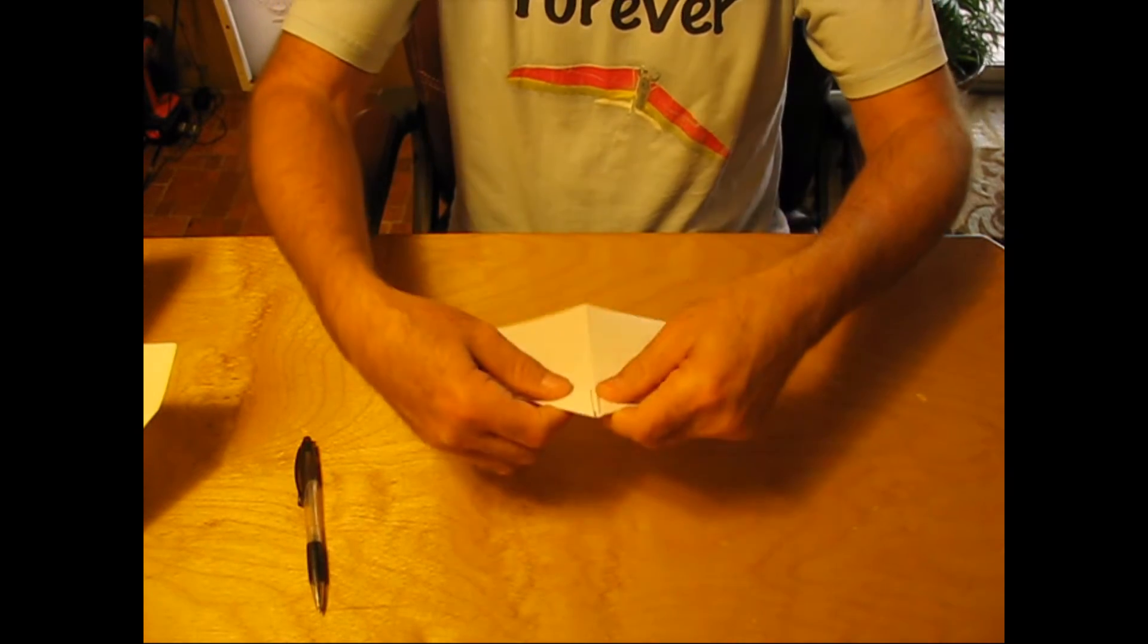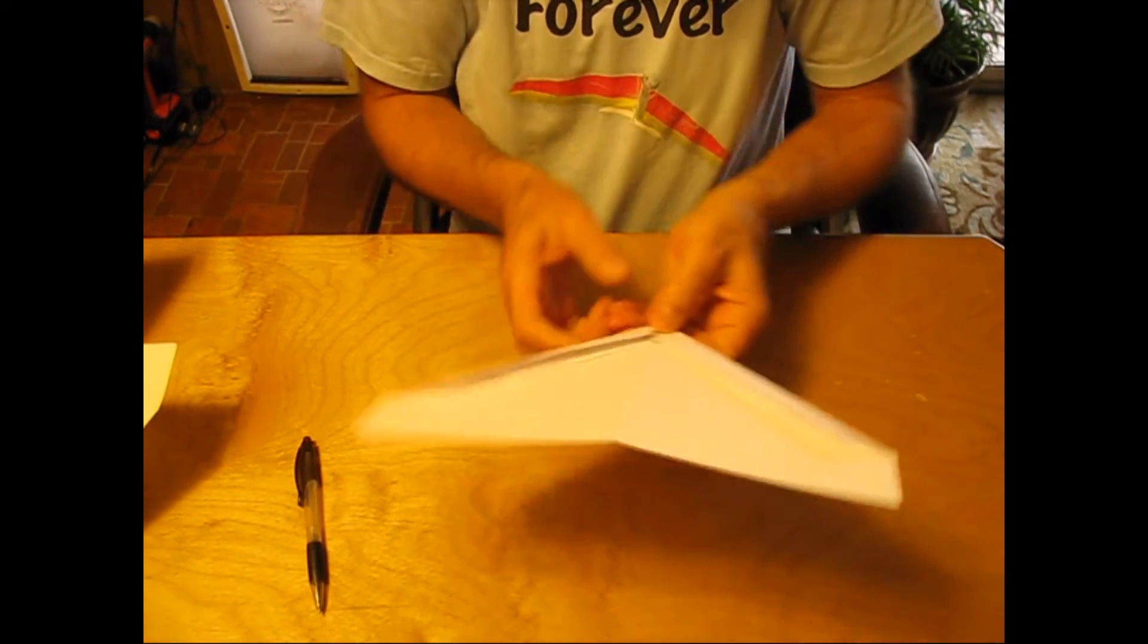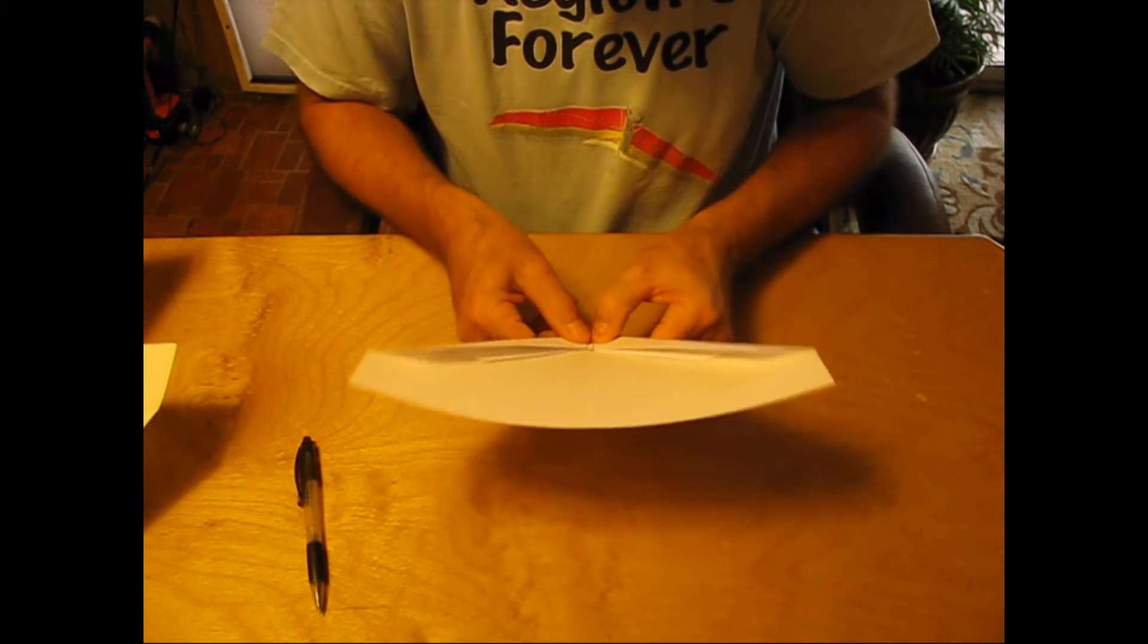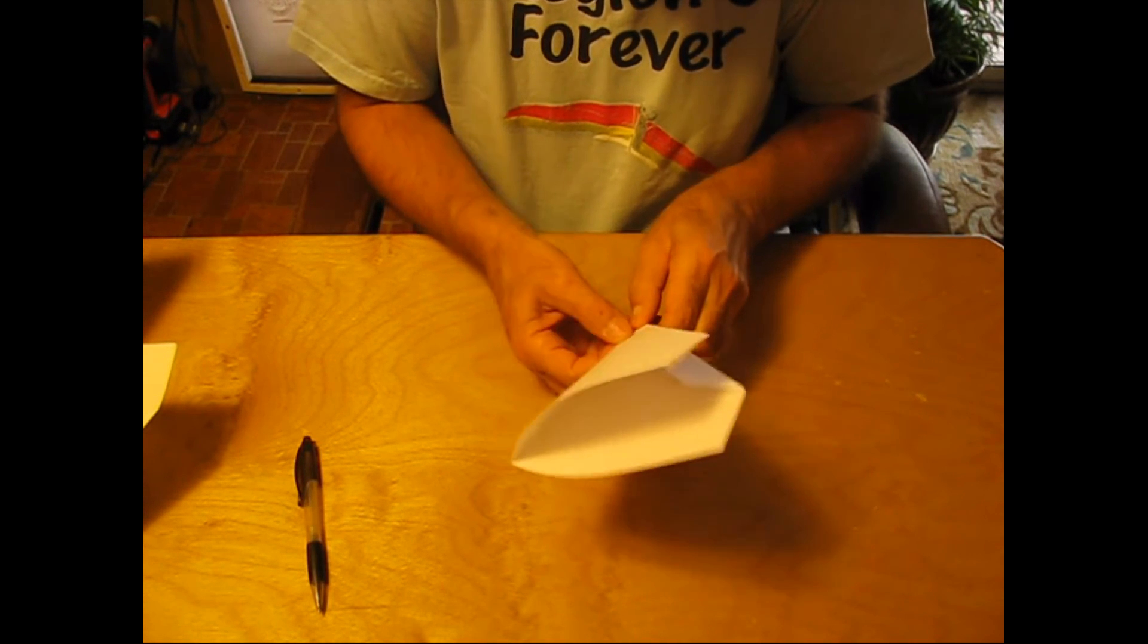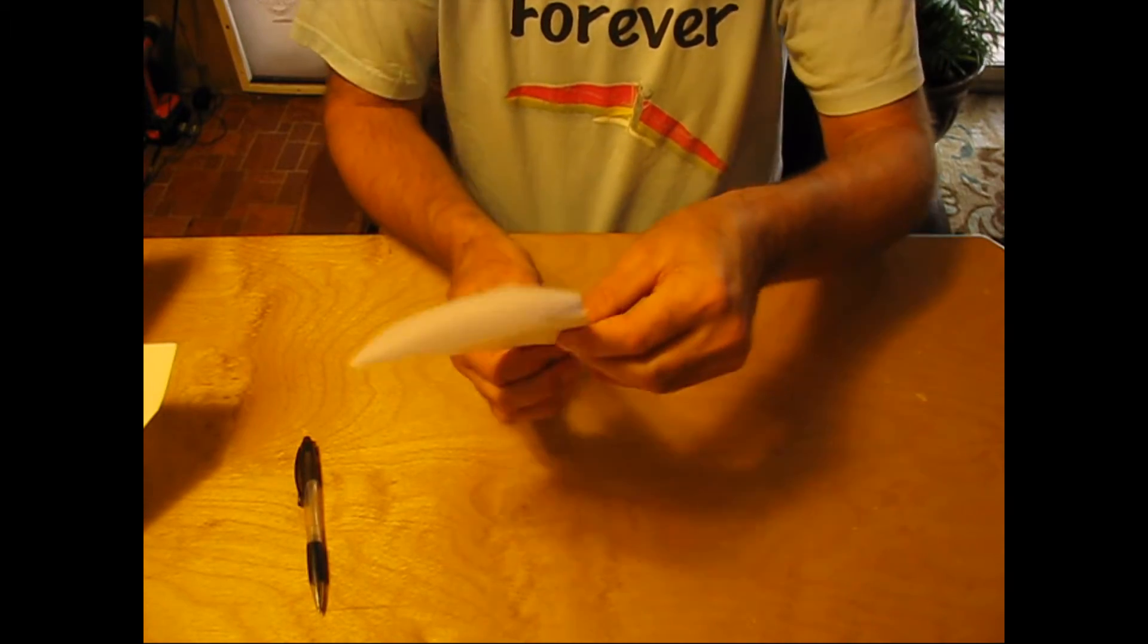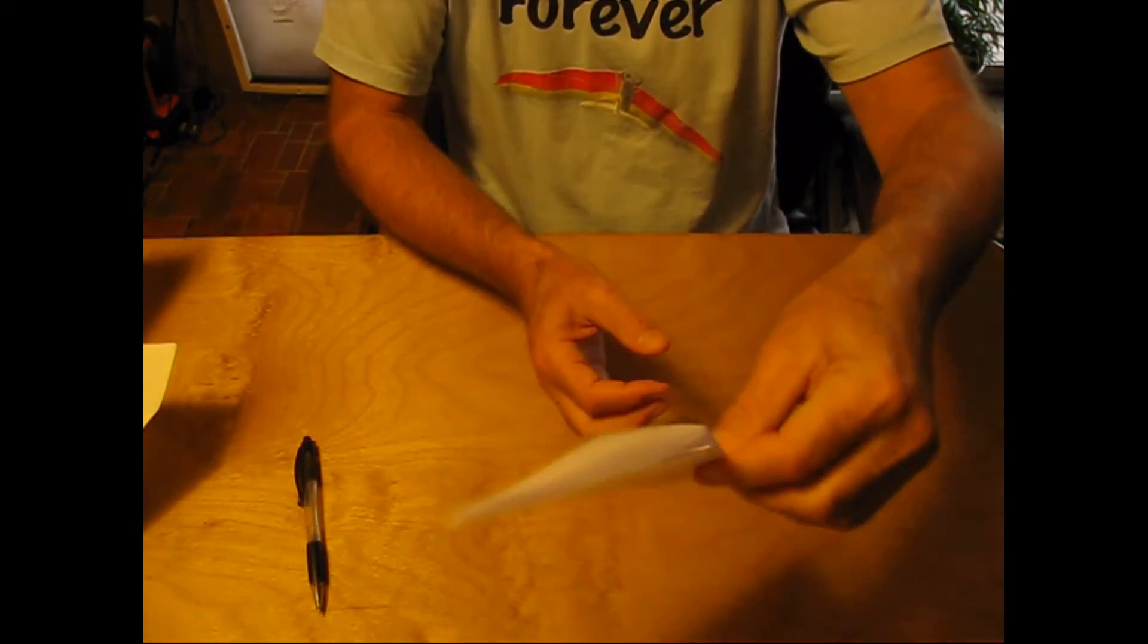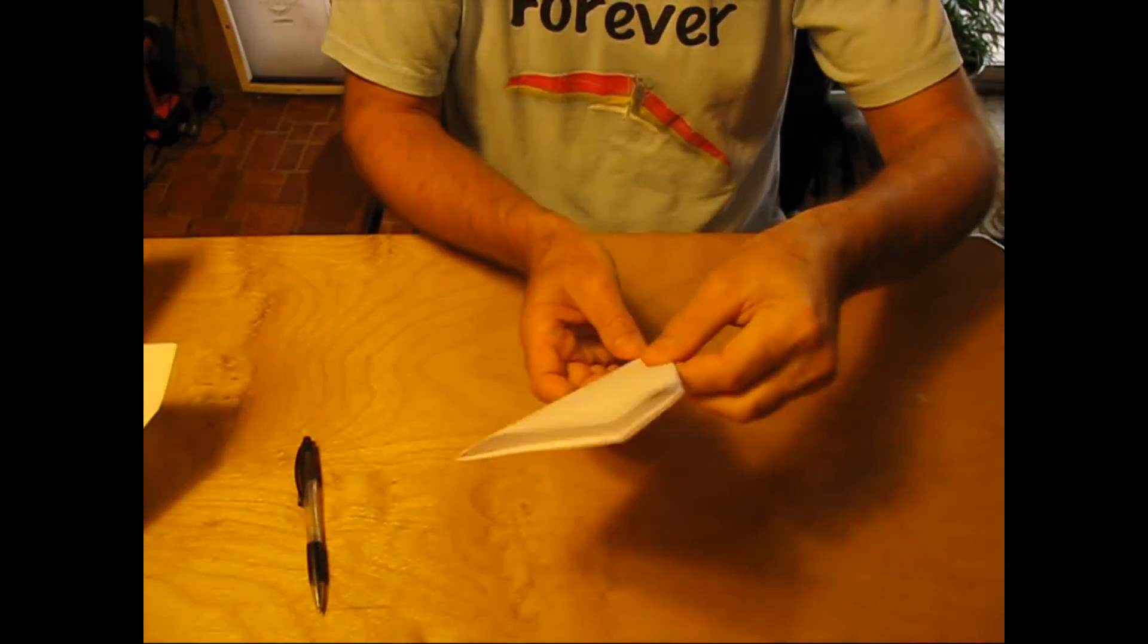And unfold. Fold it back the other way again. Now a lot of paper in here. You just kind of have to work it until it gives up and folds again. Now you see we're all lined up nice and even and we're ready for the next step.